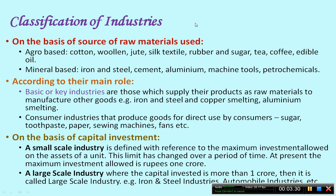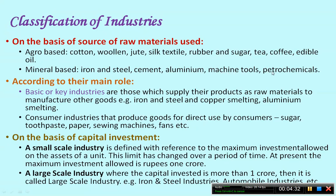Classification of industries: industries are classified on different bases. On the basis of source of raw material, industries are classified into agro-based and mineral-based industries. Agro-based industries get their raw material from agriculture, such as cotton, woolen, jute, silk textile, rubber, sugar, tea, coffee, and edible oil. Mineral-based industries use minerals as input, like iron and steel, cement, aluminum, machine tools, and petrochemicals.